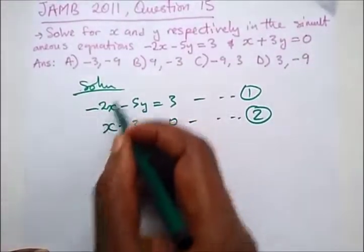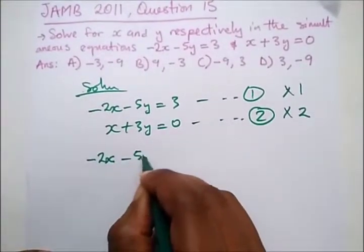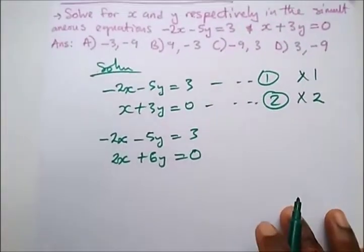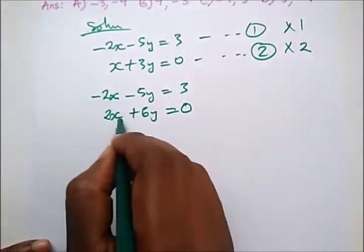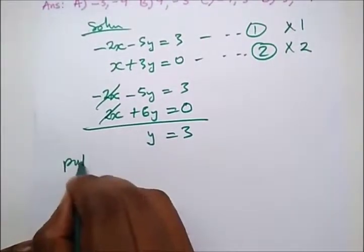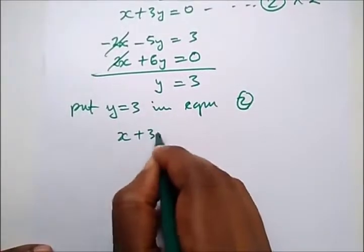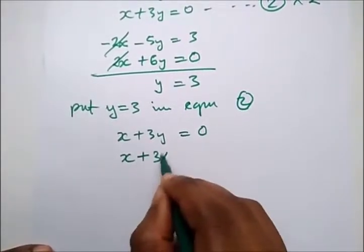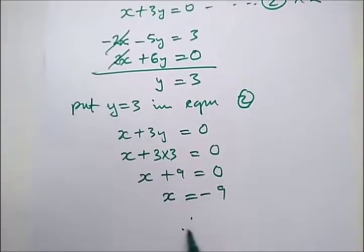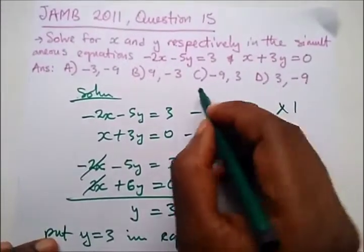Let's cancel out x. We multiply equation 1 by 1 and equation 2 by 2, giving us minus 2x minus 5y equals 3 and 2x plus 6y equals 0. Adding these, minus 2x plus 2x cancels out, and minus 5y plus 6y gives y, and 3 plus 0 gives 3, so y equals 3. Substituting into equation 2: x plus 3 times 3 equals 0, so x plus 9 equals 0, therefore x equals minus 9. Our answer is x equals minus 9 and y equals 3. That is option C.